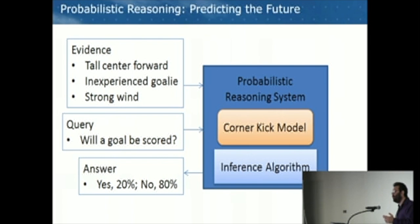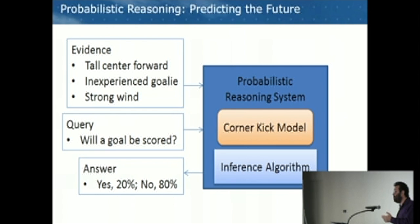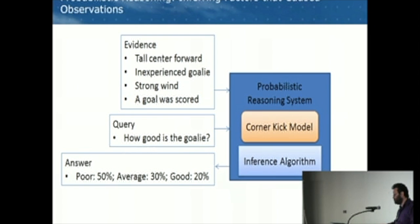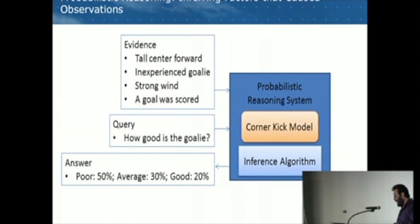Let me give you an example — predicting the future. Suppose you're a manager of a soccer team and you want to know what's going to happen on a certain corner kick. You have a model of how corner kicks work in general, and evidence about a particular corner kick: the center forward is tall, the goalie is inexperienced, it's a strong wind, and your query is whether a goal will be scored. You run your inference algorithm on your model and it gives you an answer framed in terms of probabilities. If a goal was scored, you can ask why — maybe the goalie was poor with probability 50%, so you found a possible cause.